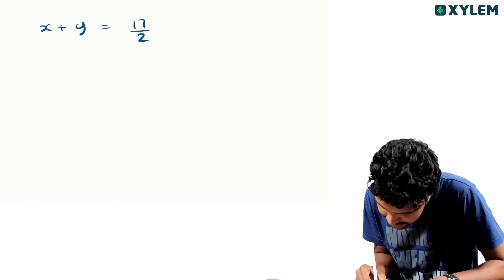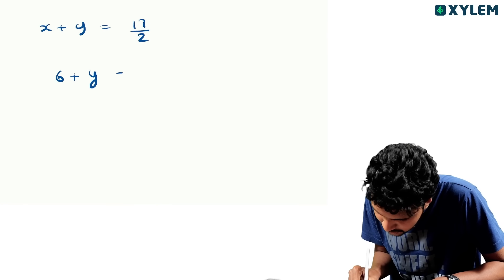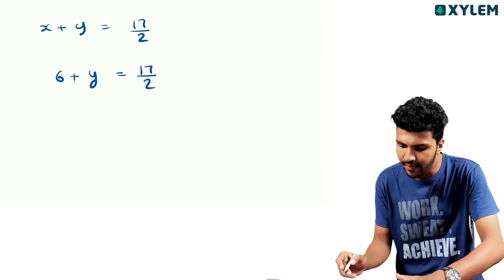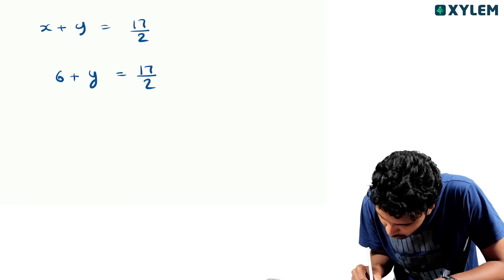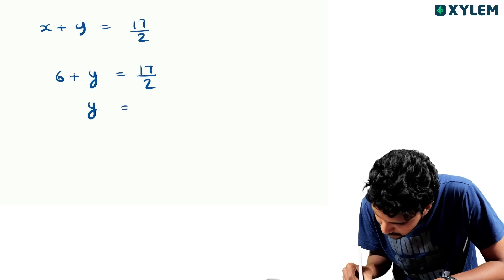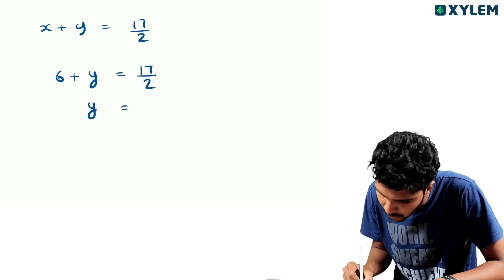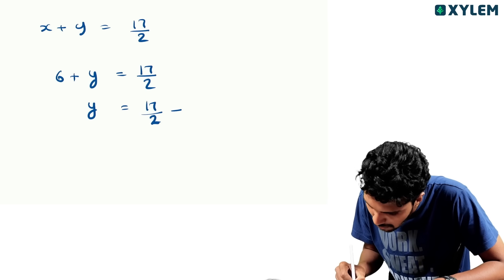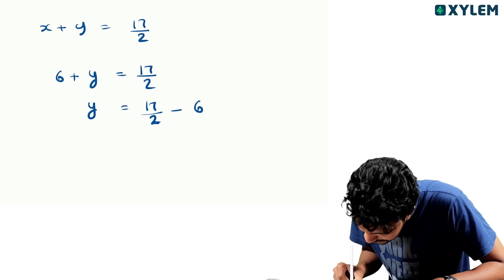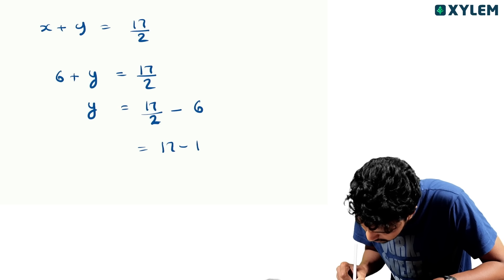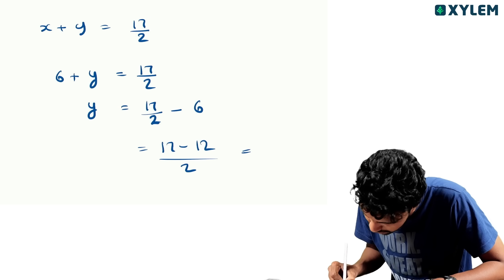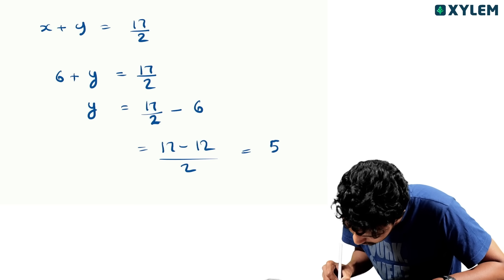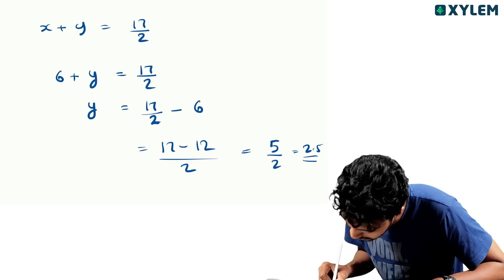So x equals 6. 6 plus y is equal to 17 by 2. y is equal to 17 by 2 minus 6, which is equal to 17 minus 12 divided by 2, equal to 5 by 2, which is equal to 2.5.